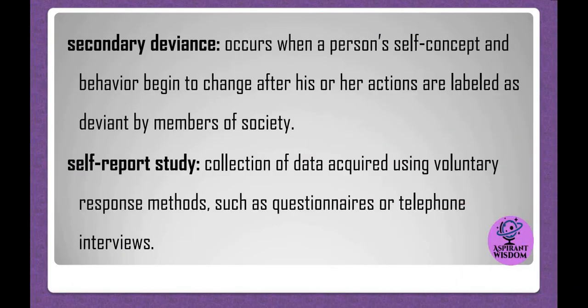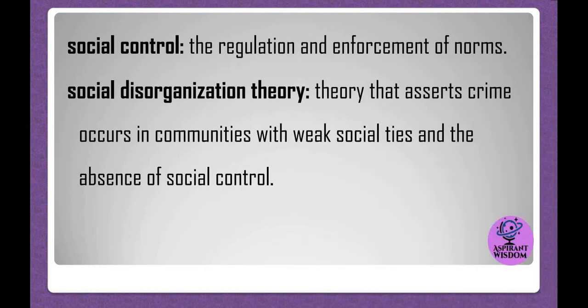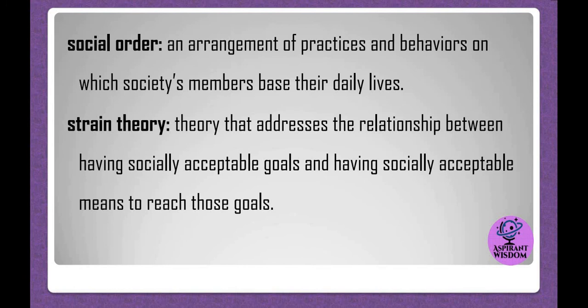Secondary deviance: occurs when a person's self-concept and behavior begin to change after his or her actions are labeled as deviant by members of society. Self-report study: collection of data acquired using voluntary response methods, such as questionnaires or telephone interviews. Social control: the regulation and enforcement of norms. Social disorganization theory: a theory that asserts crime occurs in communities with weak social ties and the absence of social control. Social order: an arrangement of practices and behaviors on which society's members base their daily lives. Strain theory: a theory that addresses the relationship between having socially acceptable goals and having socially acceptable means to reach those goals.